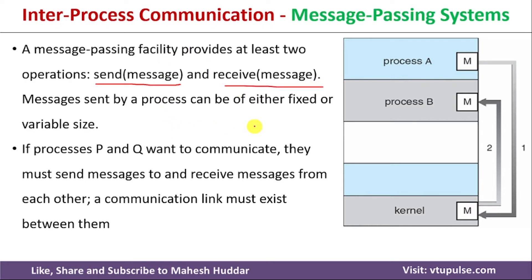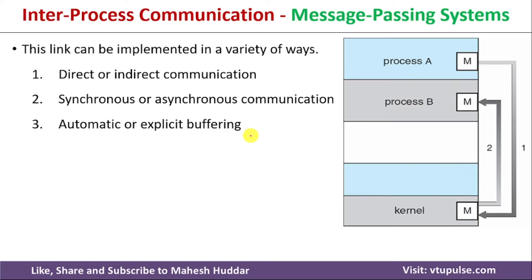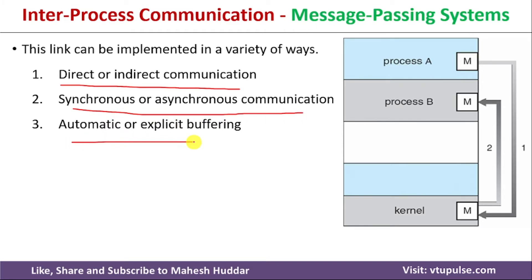The size of the message may be fixed or variable. If Process P and Q want to communicate, either process should send a message and the other should receive it over the communication link. There are different types of Message Passing Systems: one is Direct or Indirect Communication, the second is Synchronous or Asynchronous Communication, and the third is Automatic or Explicit Buffering.